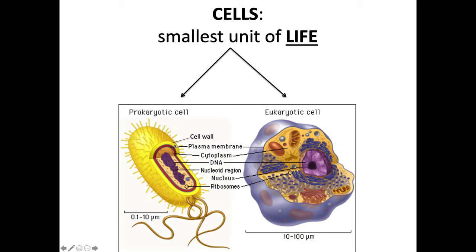Now let's compare that to a eukaryotic cell. The eukaryotic cell is much larger and more complex. It has a nucleus which contains the DNA. The structures outside the nucleus are organelles — you can have mitochondria that make energy, rough ER that makes proteins, smooth ER that makes lipids, etc. Eukaryotic cells also have a plasma membrane to hold everything inside. They have membrane-bound organelles, whereas prokaryotic cells do not have membrane-bound organelles.